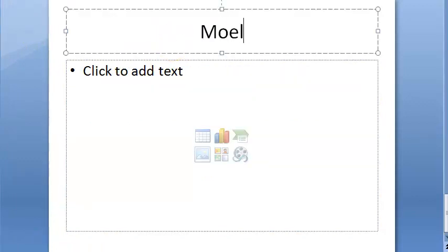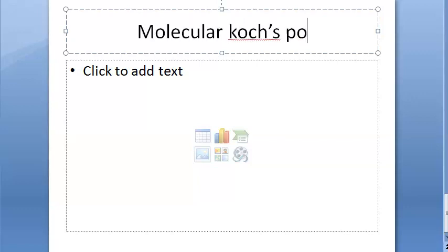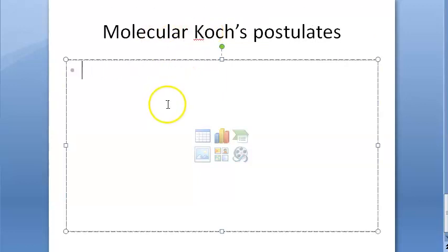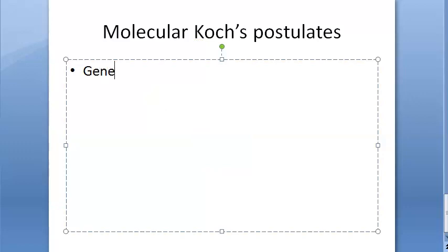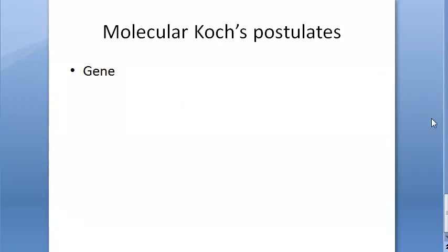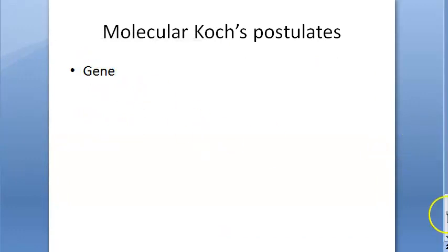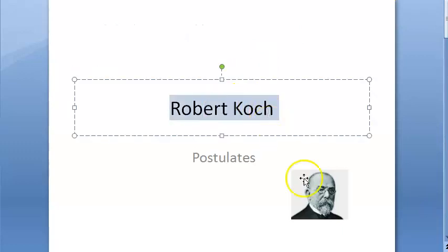Some further molecular Koch's postulates were defined later. Instead of talking about the microorganism, they talk about the gene that makes the antigen. The gene should be associated with the pathogenic strain; if that gene is inactivated, pathogenicity decreases; replacing the mutated gene with the normal type should restore pathogenicity. However, we are not going into the molecular Koch's postulates in detail.